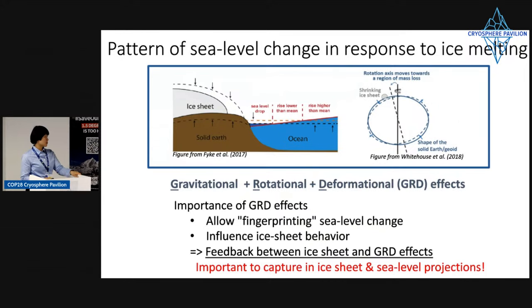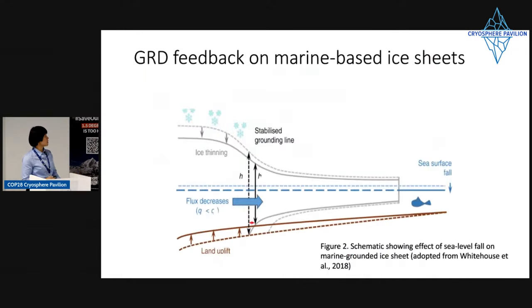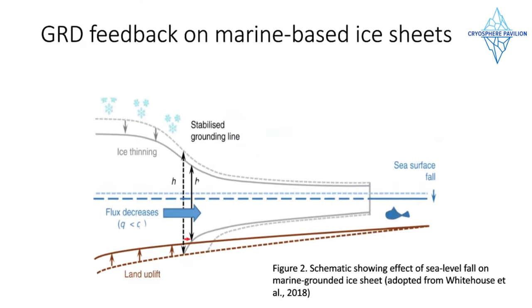Ice sheets change in response to climate change, and GRD effects in response to ice sheet changes in turn affect ice sheet dynamics. This feedback is really important to capture in projecting both ice sheet behavior and sea level. GRD effects are especially important when ice sheets are based in marine regions — meaning the ice sheet is sitting below the ocean — which makes it pretty unstable.